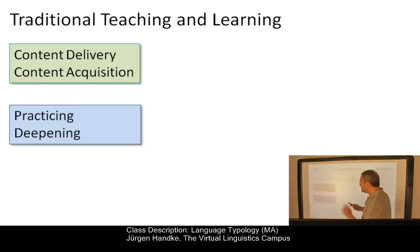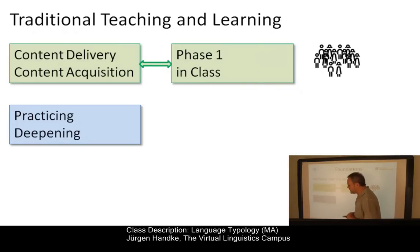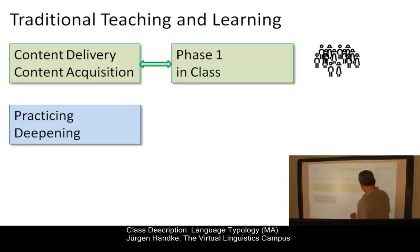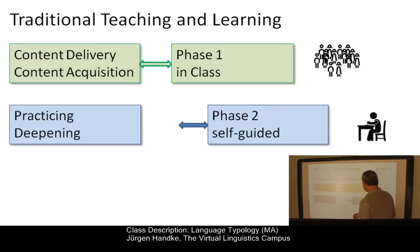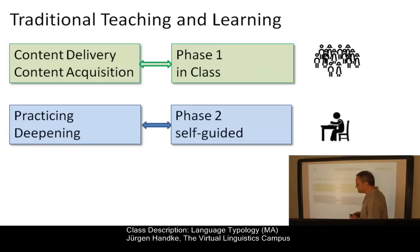In traditional teaching, content delivery and content acquisition are realized in class, where several dozens of students have to gather at the same time to be entertained by their teacher. In a second phase, students practice on their own, on the basis of additional exercise material, homework tasks, etc.